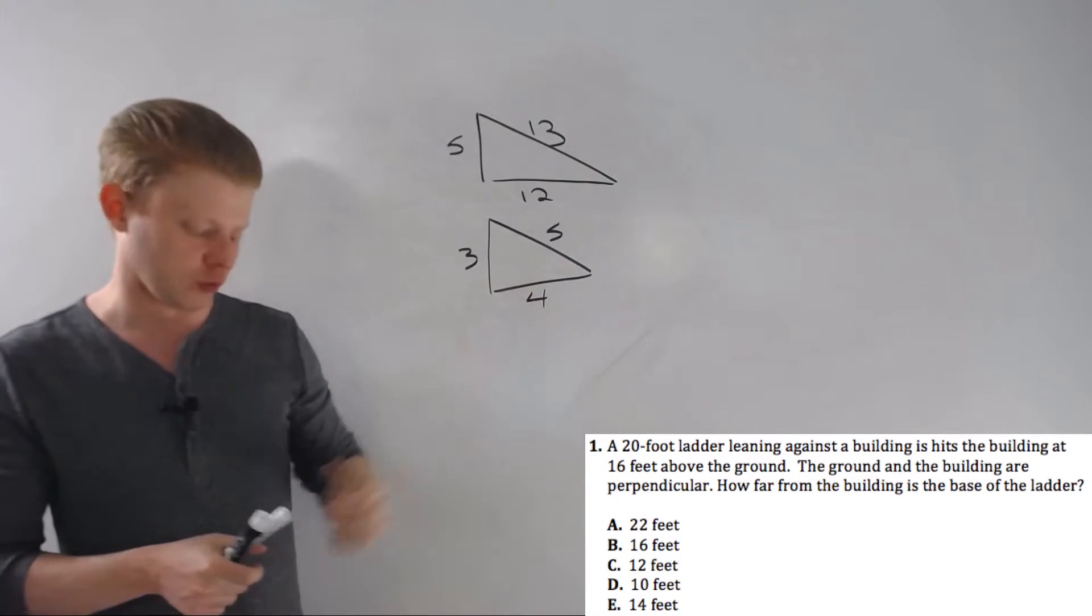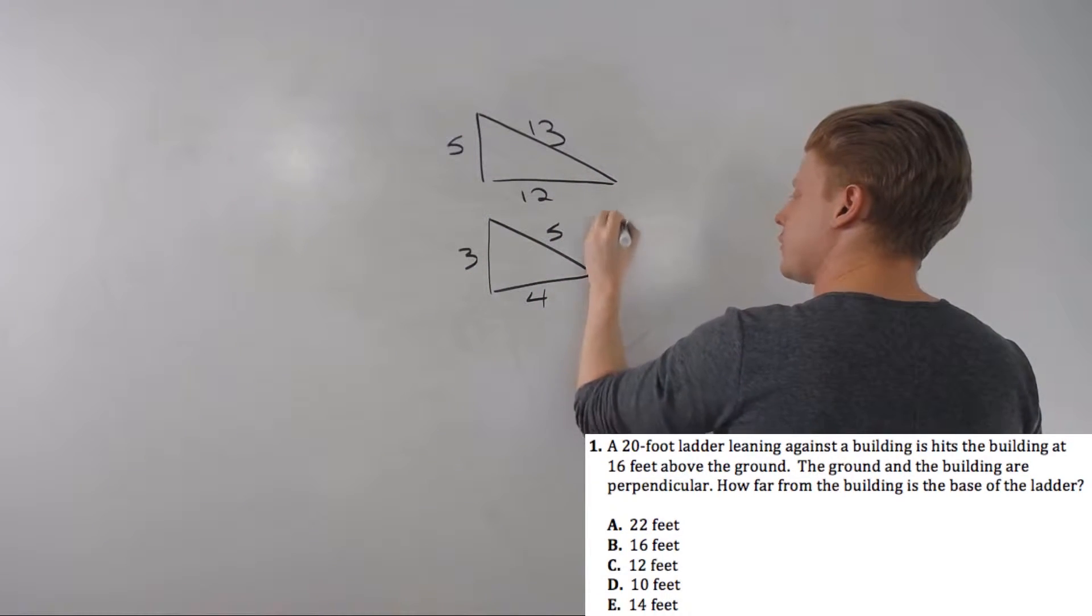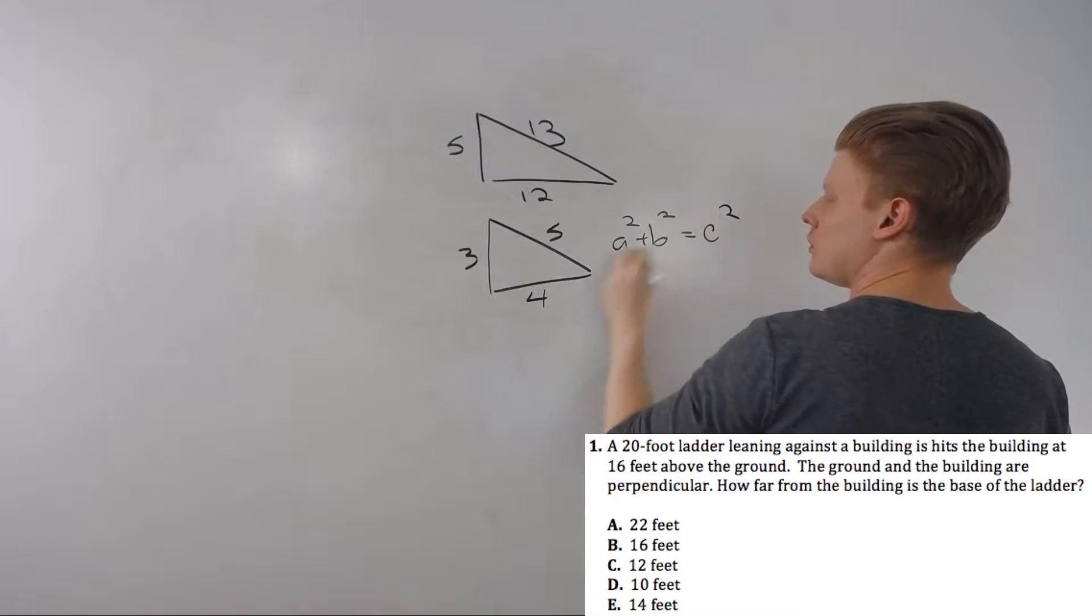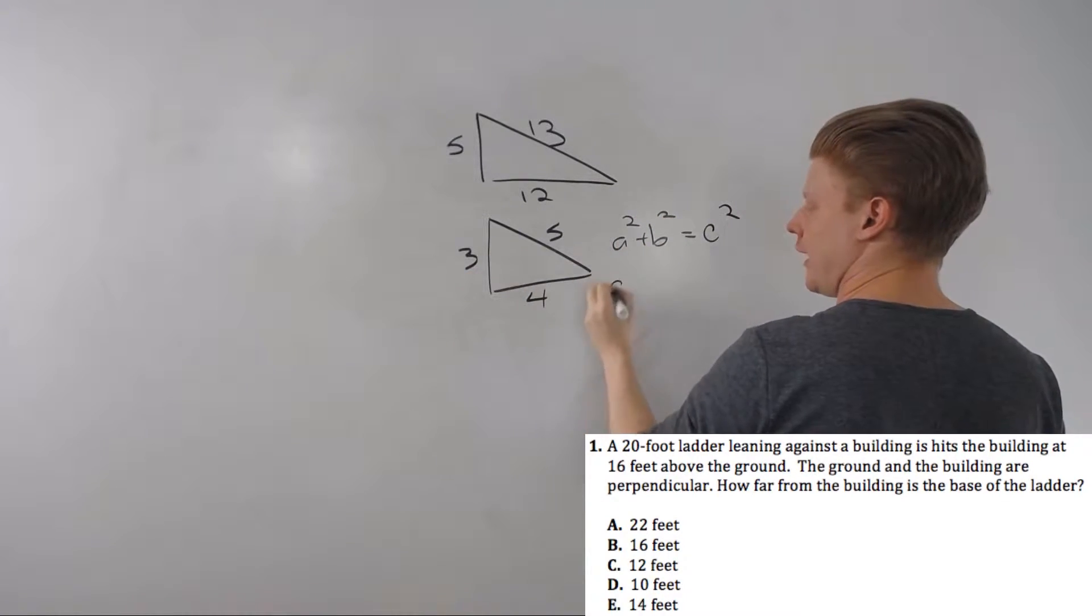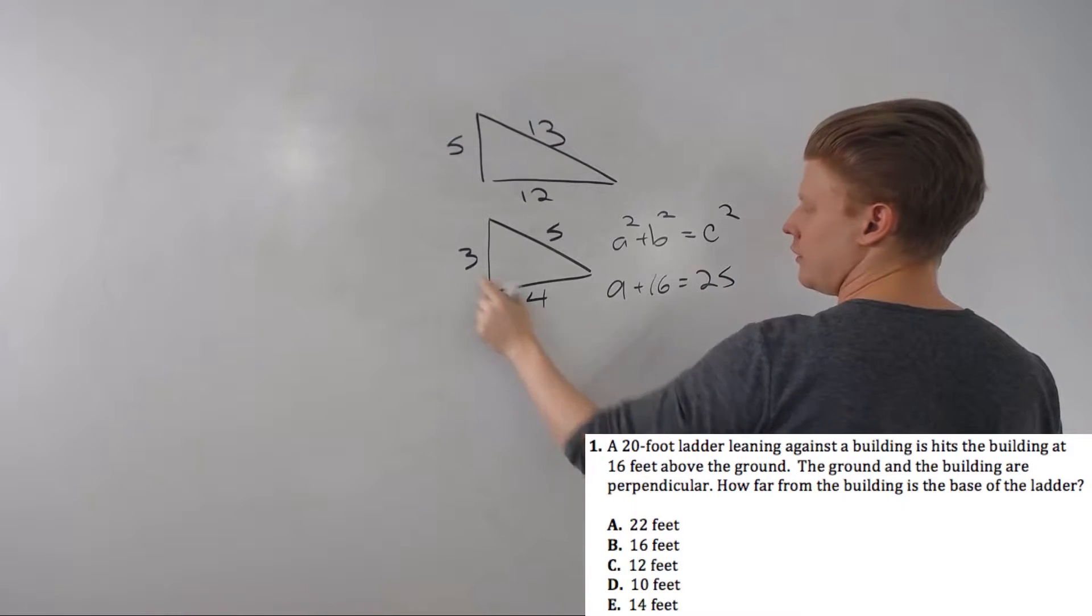So 3-4-5, let's walk through how these work. A squared plus B squared equals C squared. We did this in the last right triangle video as well. So 9 plus 16 equals 25—perfect square, perfect square, perfect square. 3-4-5.